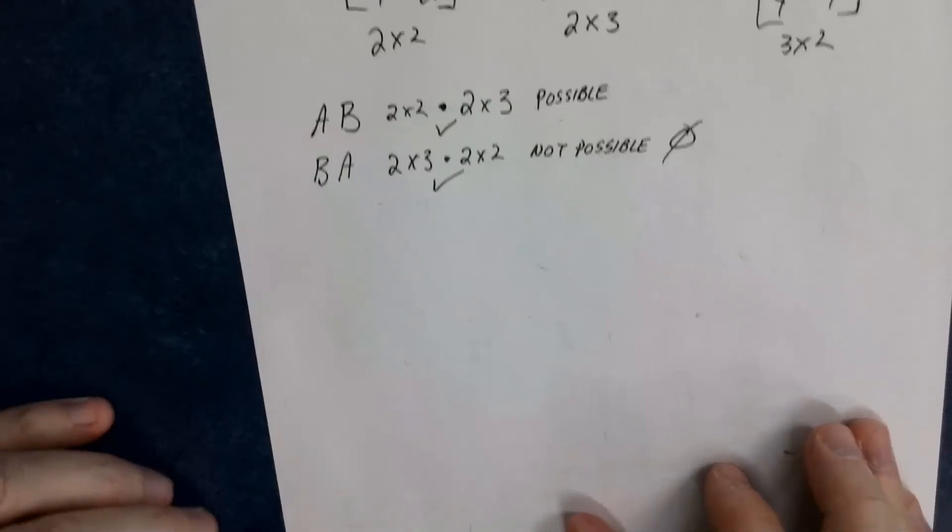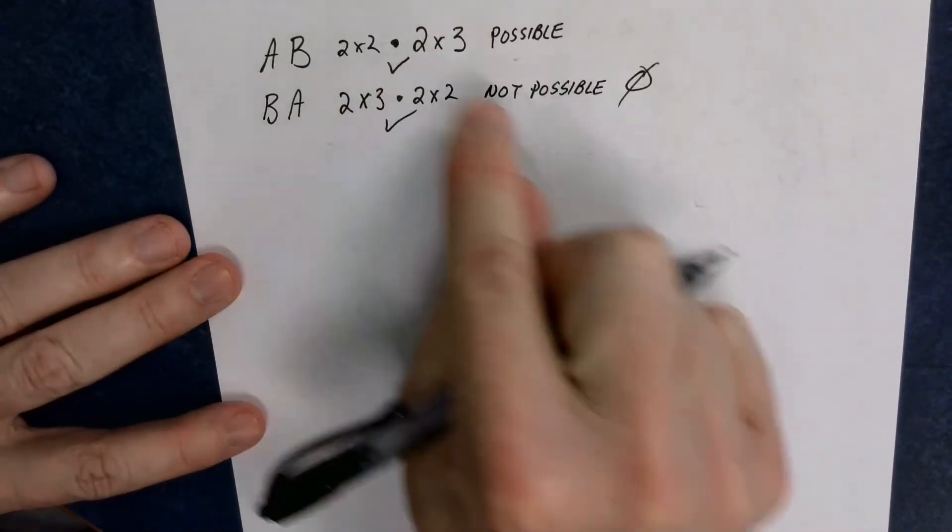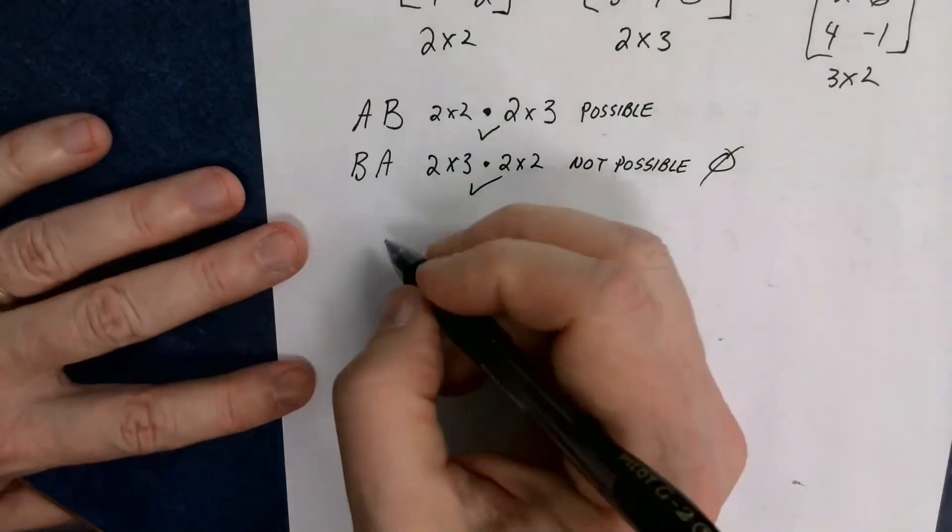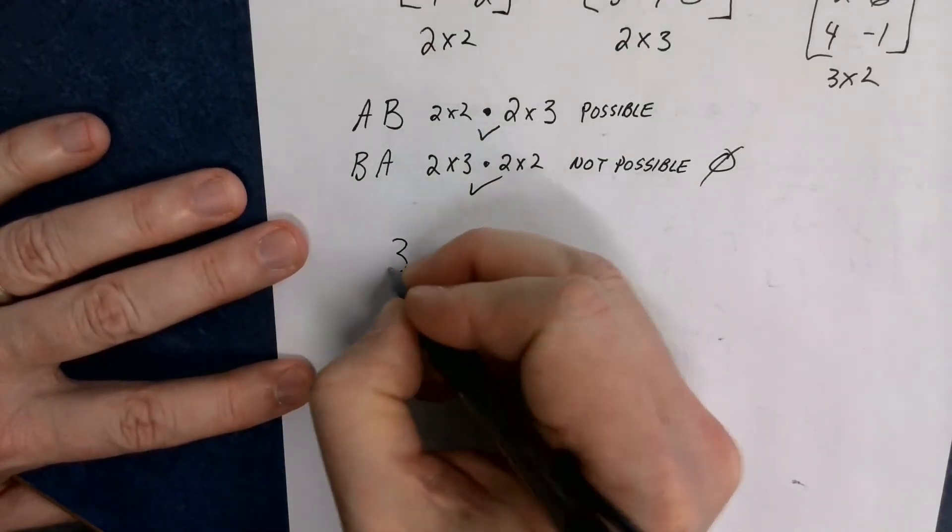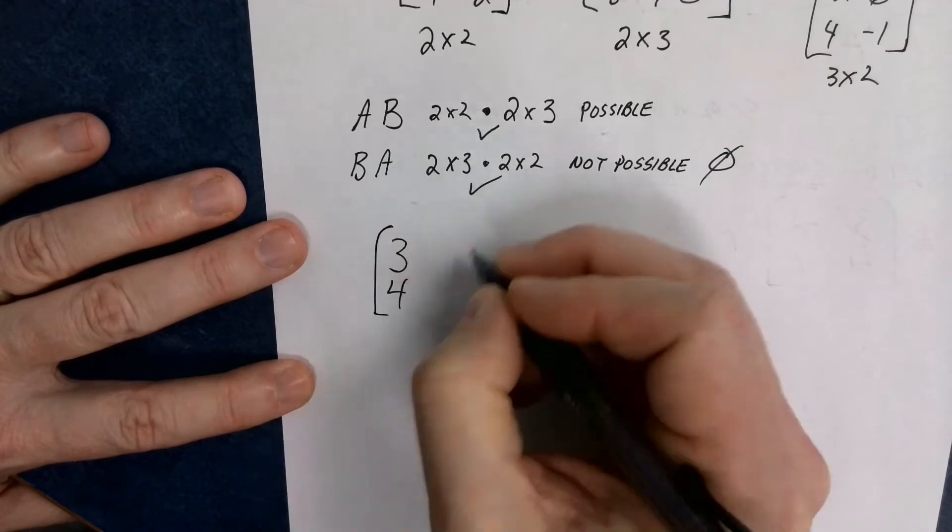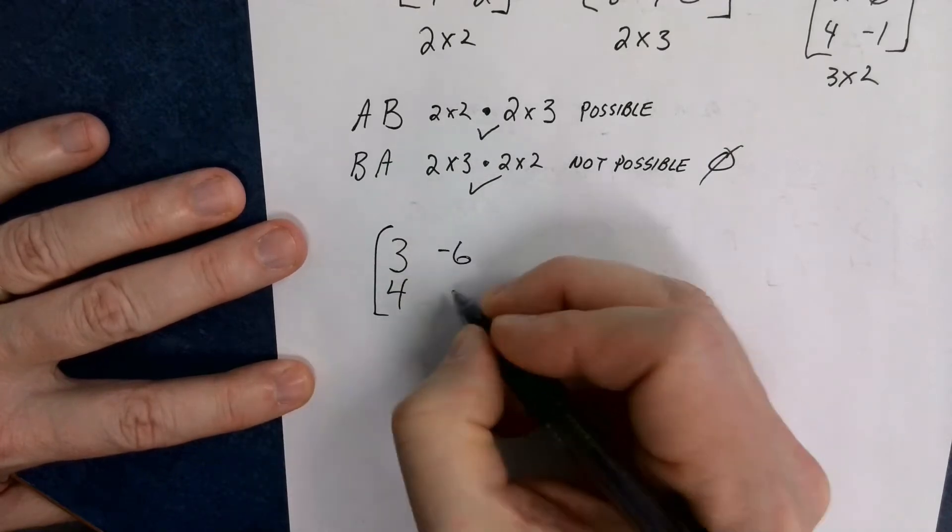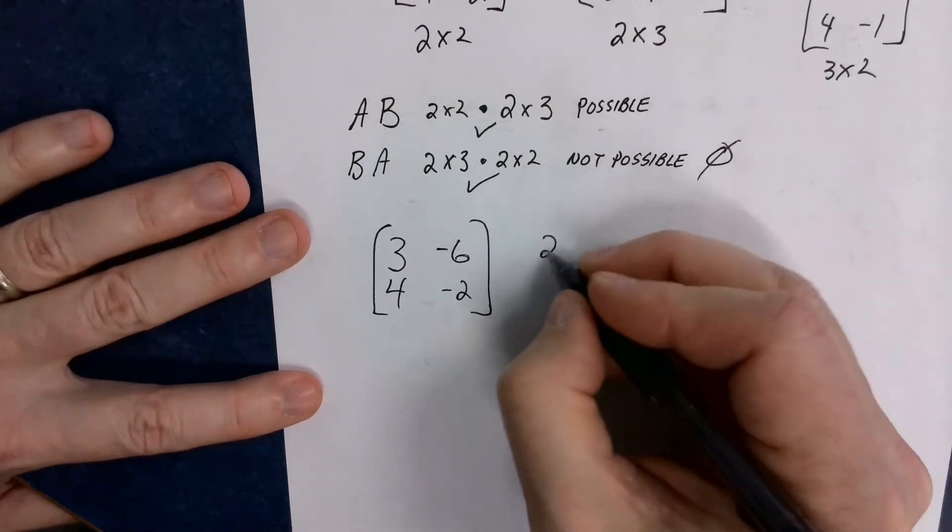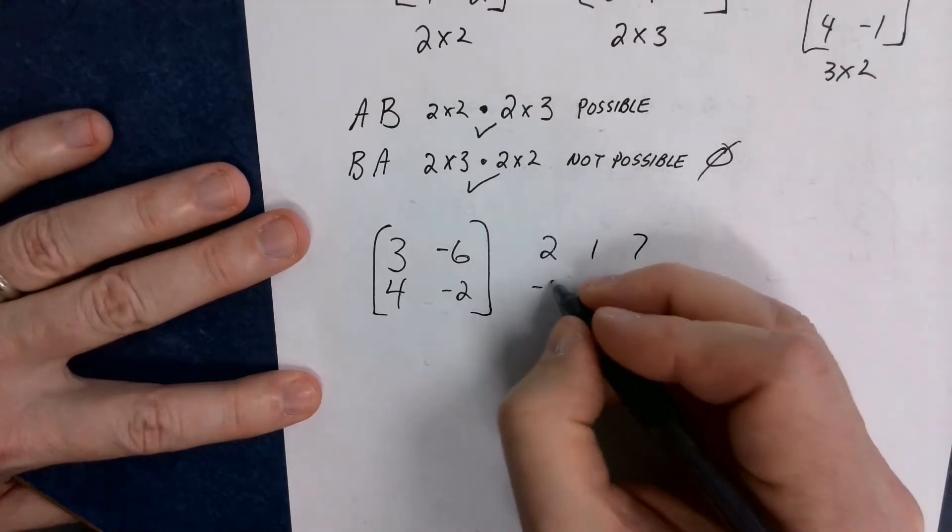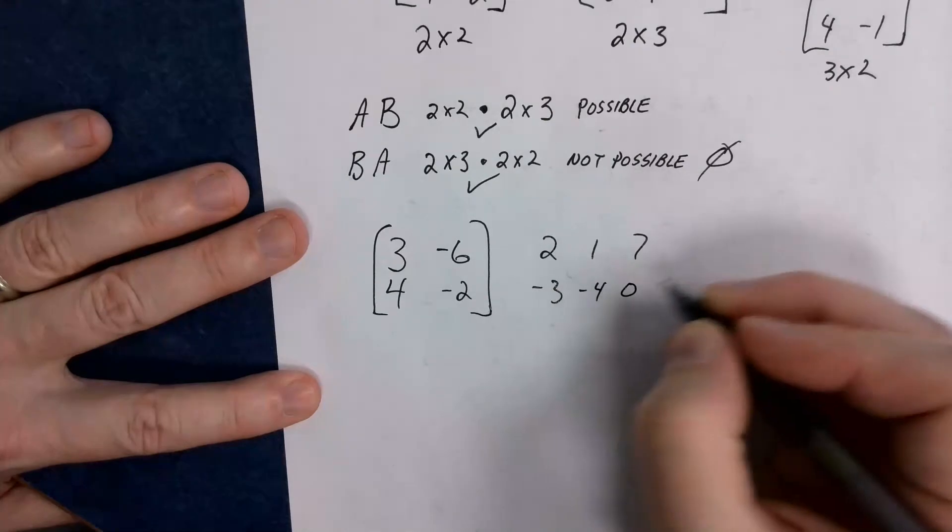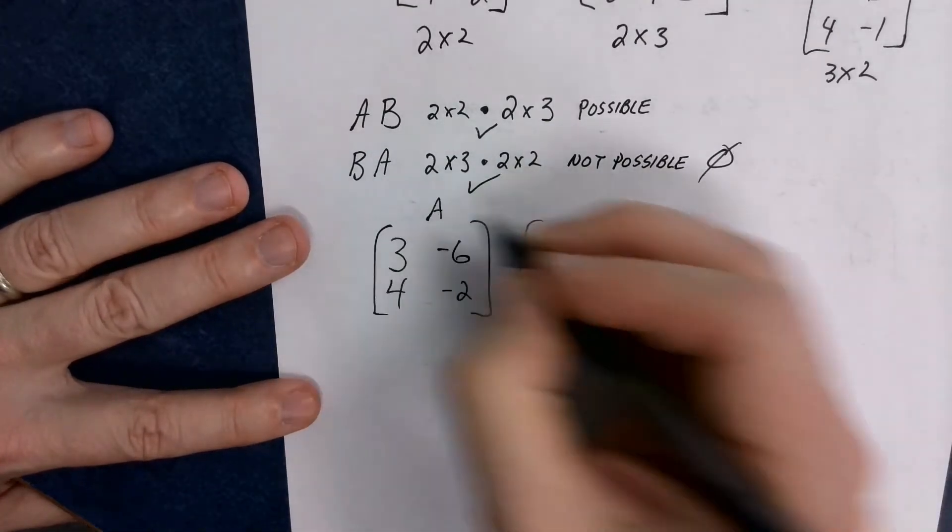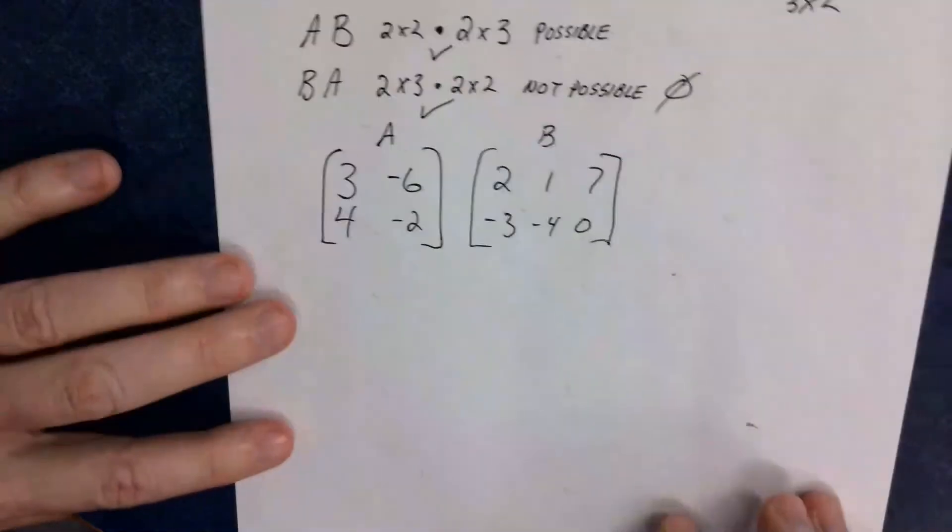Okay, so I'm going to try and do A times B, and I'm going to write it down here below. So again, I'm just going to copy it down so you guys can see it. So I'm going to put them right next to each other. A: 3, 4, negative 6, negative 2. And a 2, 1, 7, negative 3, negative 4, 0. And again, I have to put them down in that order. I have to put A, then B.